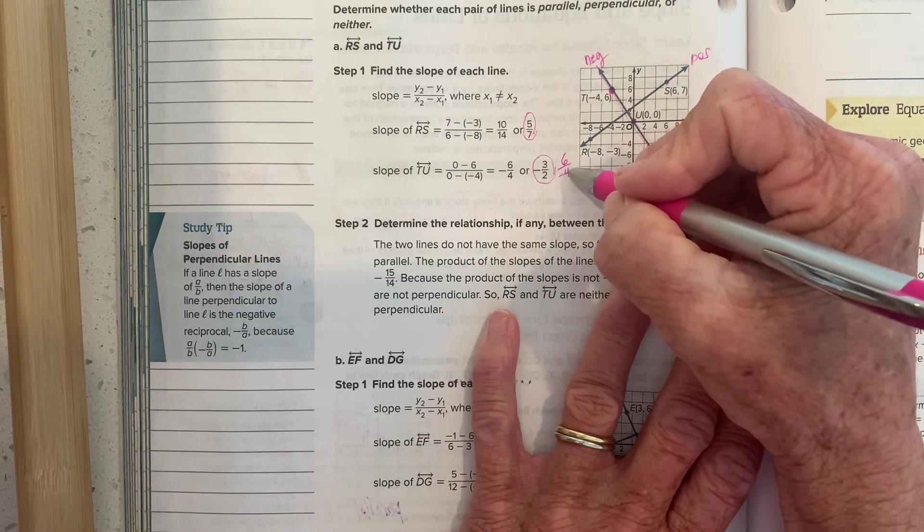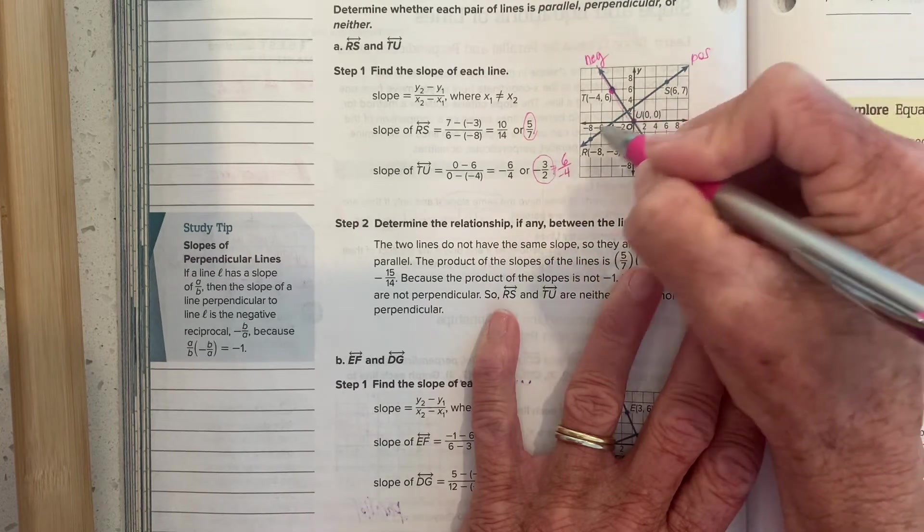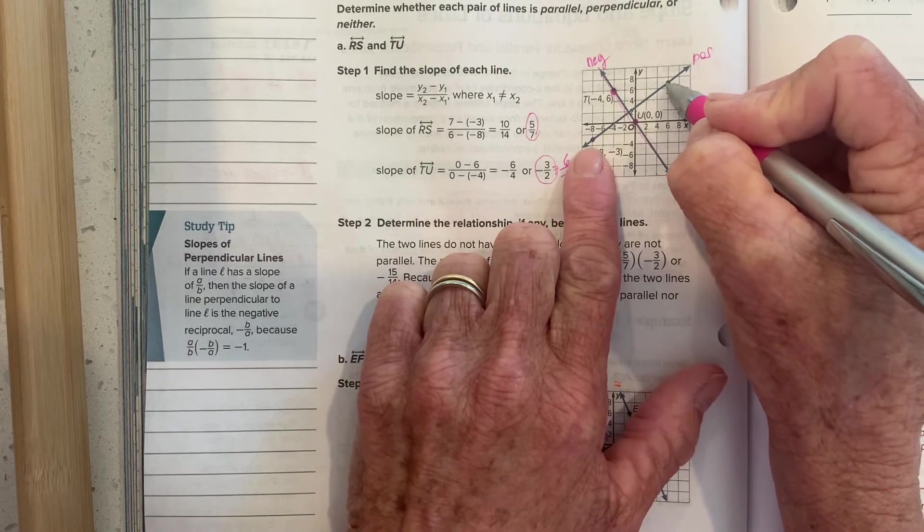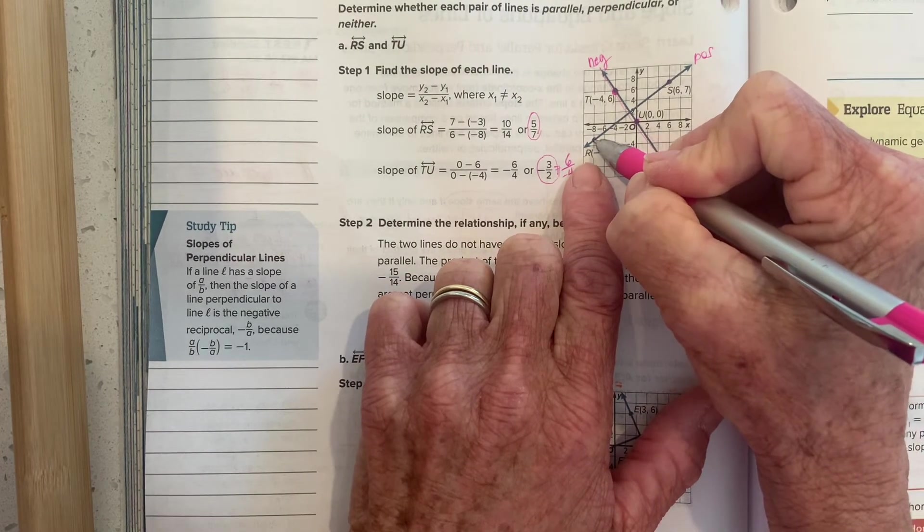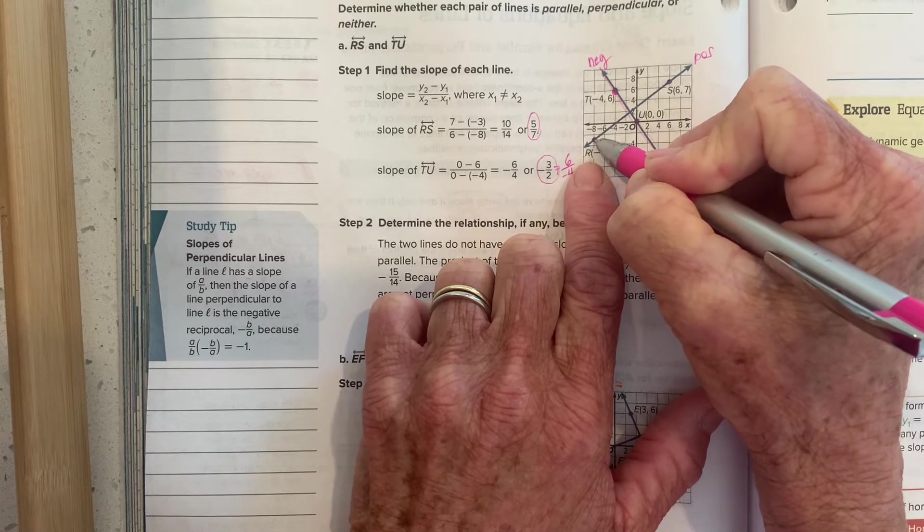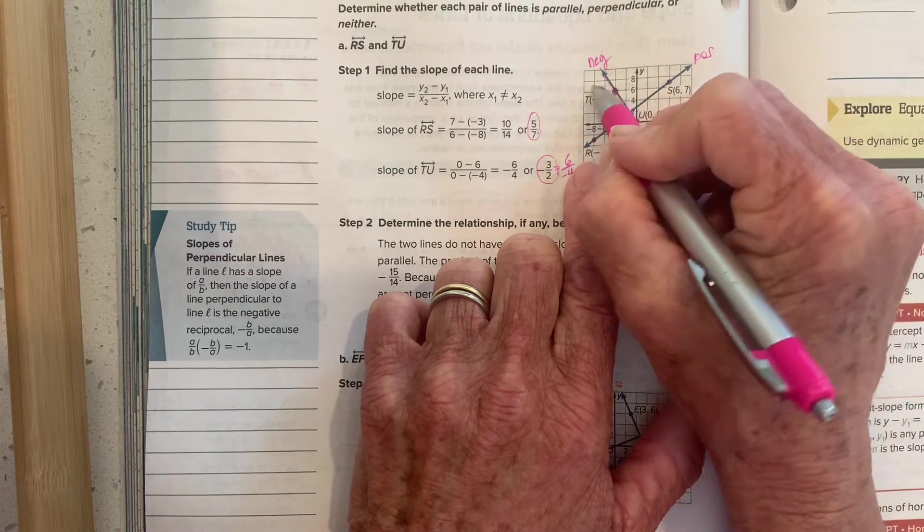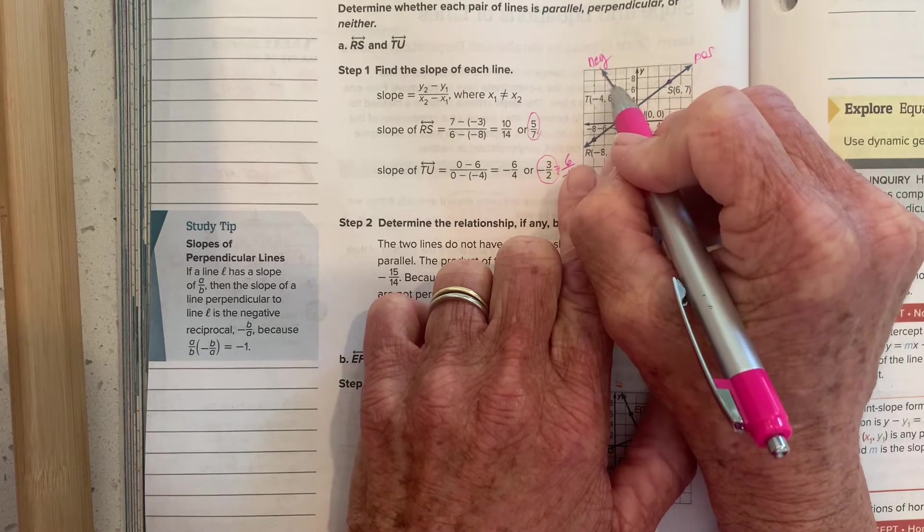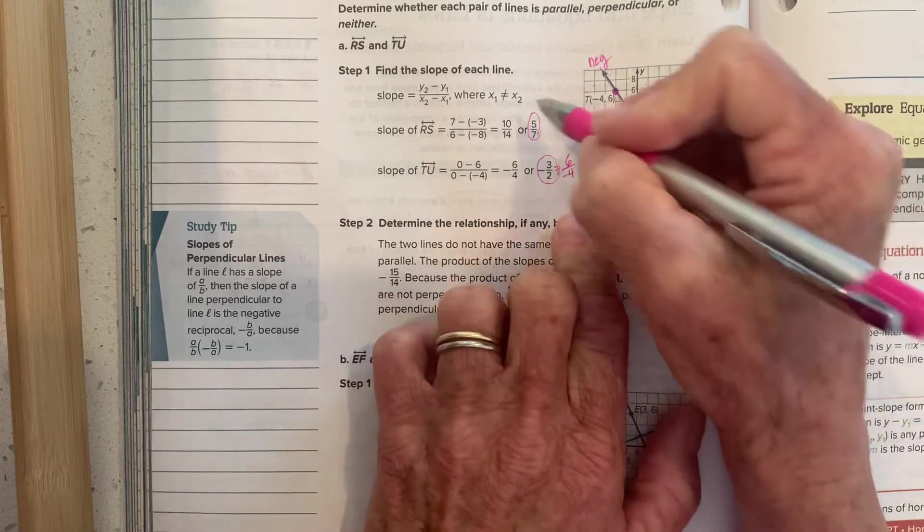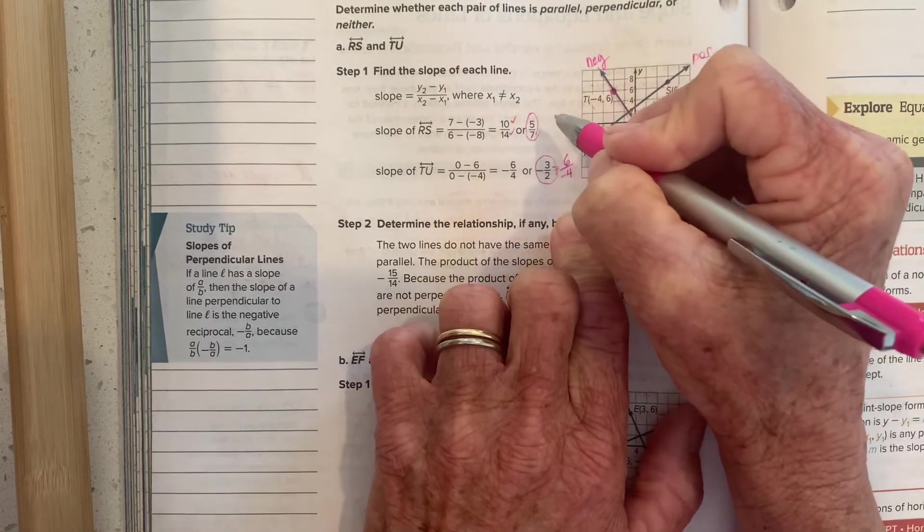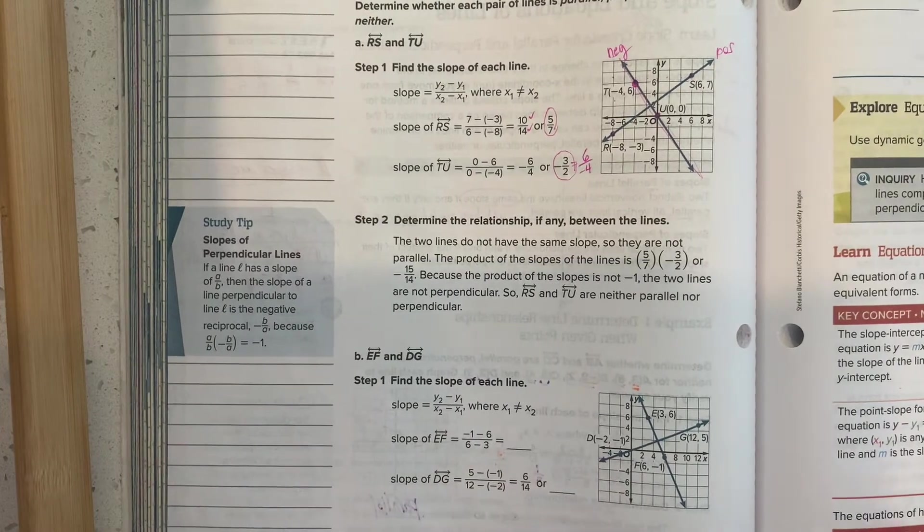6 over negative 4 reduces down to negative 3 halves. On this line, I have a little further to rise and run. Remember, we're counting by twos. I'm at the middle of the box here, so be careful. But I go up 2, 4, 6, 8, 10. And I go over 2, 4, 6, 8, 10, 12, 14. Up 10 over 14. And there's my slope. So if you like that, we could do it that way.